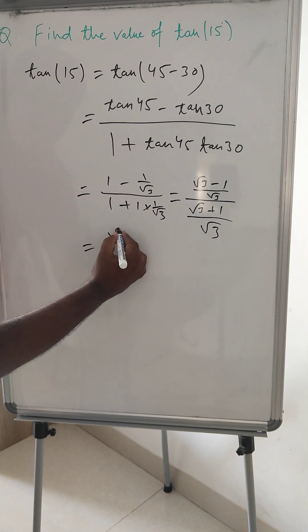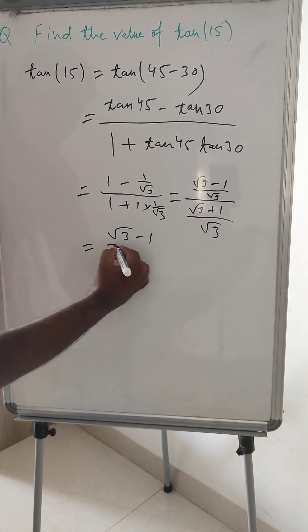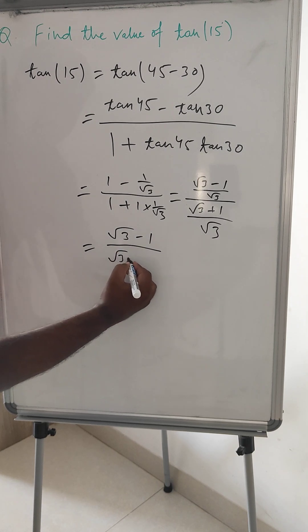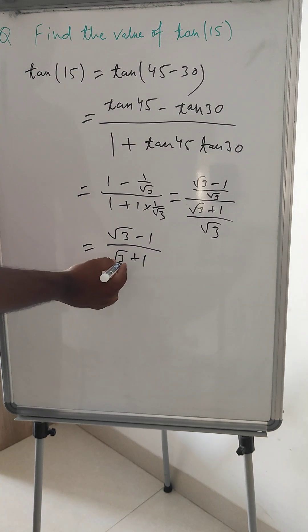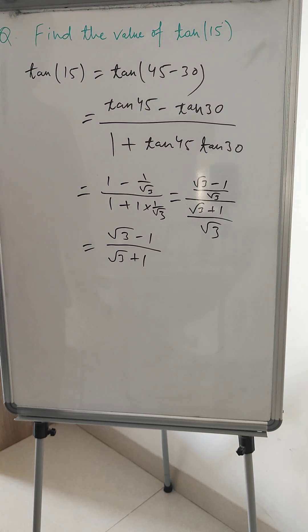So value over here is under root 3 minus 1 divided by under root 3 plus 1. So this is the value for tan 15 degrees. Thank you, thank you for watching. Please like and subscribe.